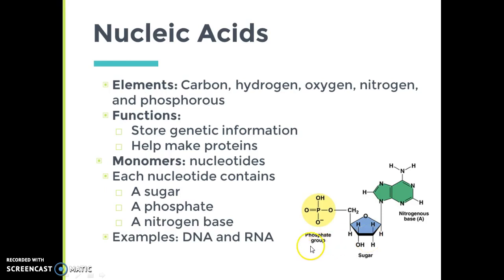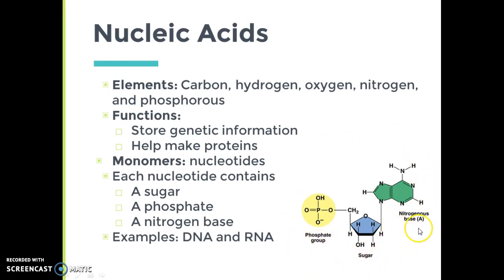The sugar we can recognize as a simple ring-like structure — here we see a 5-carbon or pentose sugar. The phosphate group is easy to recognize because it has phosphorus, or a P, in it. The nitrogen base is a double ring structure, or sometimes single, with nitrogen groups in it. If many nucleotides join together through dehydration synthesis, it will form a nucleic acid.